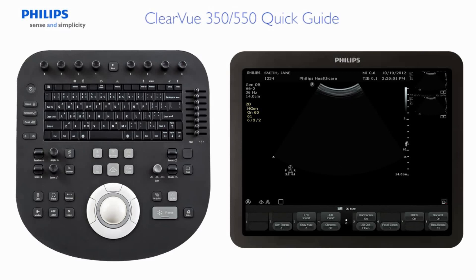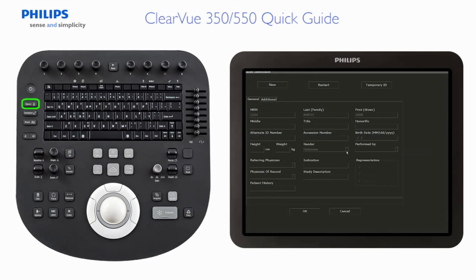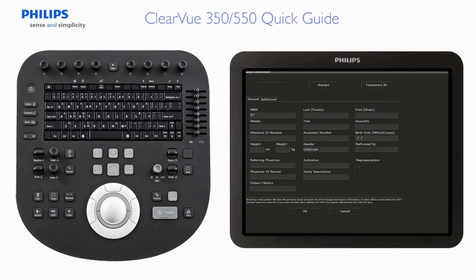Option 1 is the manual entry option. Press the patient key, then click New on the patient identification display. Selecting New will close the previous examination, including all associated measurements, and prepares the patient data entry fields for new patient data. Enter patient information and use the keyboard Tab key to advance to the next field.